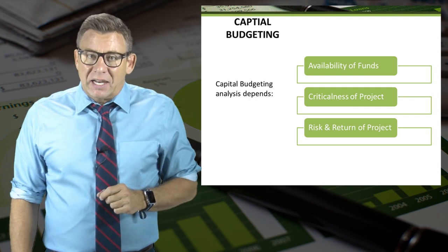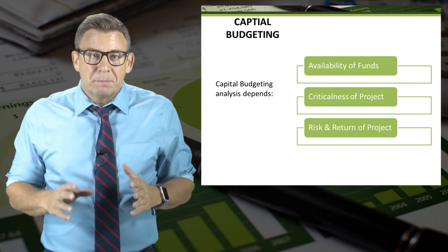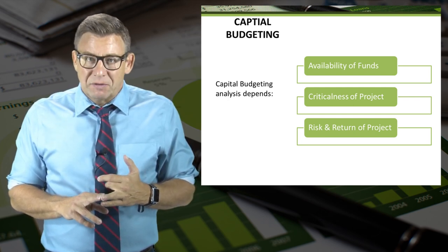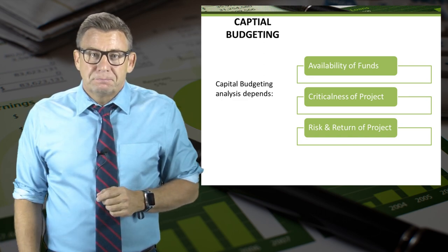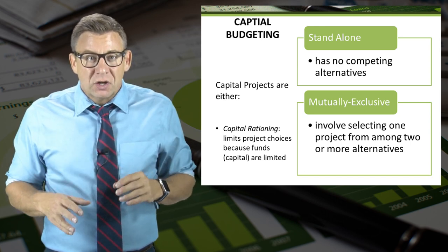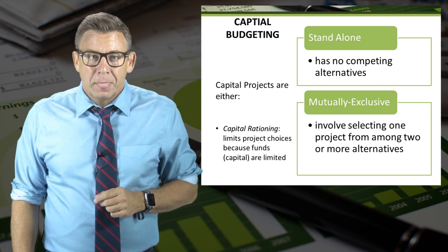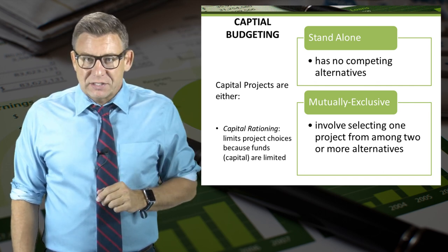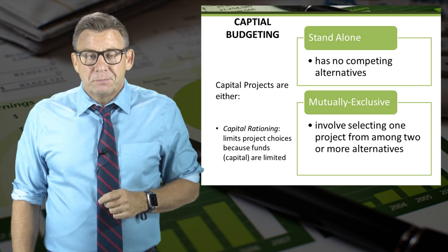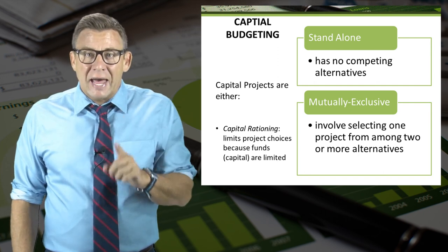Capital budgeting analysis depends on a number of things. I've simplified them here into three general categories: the availability of funds to undertake new projects, the importance and criticalness of the project, and risk and return of a project. Capital projects can either be standalone projects, where there are no competing alternatives or the company has funds available to acquire all projects that meet minimum requirements, or mutually exclusive projects, which involve choosing from competing alternatives, usually because funds are limited. This concept of having to choose between various projects because funds are limited is called capital rationing.